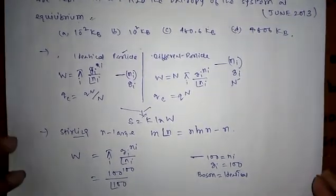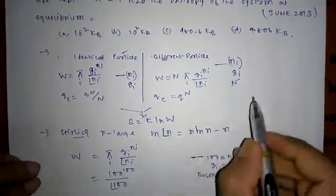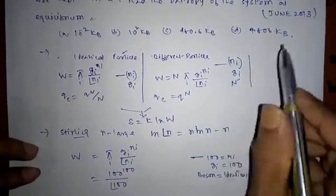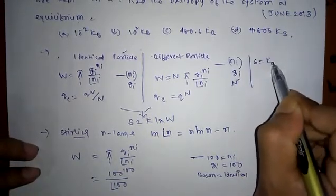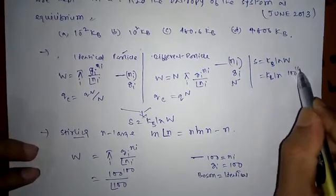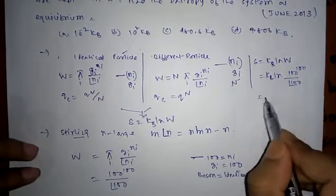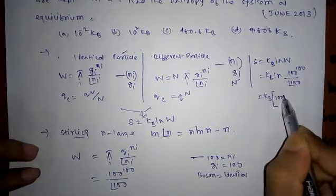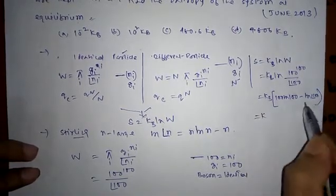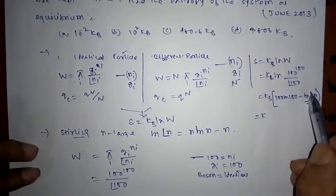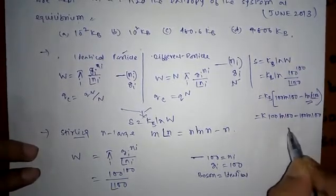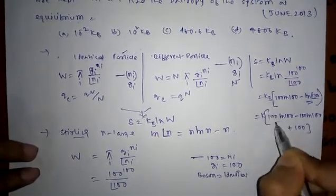Now we write S equal to k_B ln W. This equals k_B times ln of (100 to the power 100 divided by factorial of 100). Applying Stirling's approximation to the factorial term: ln(100!) equals 100·ln(100) minus 100. So we get 100·ln(100) minus [100·ln(100) minus 100].